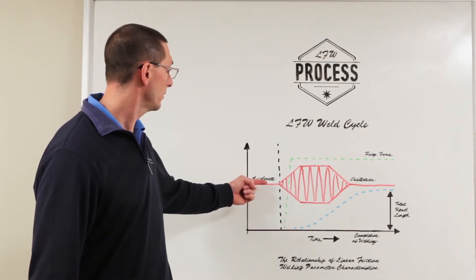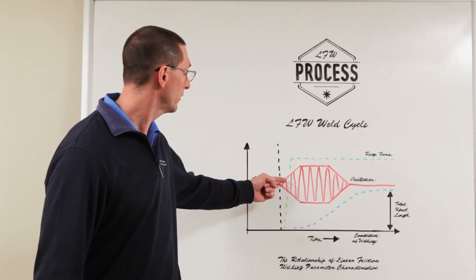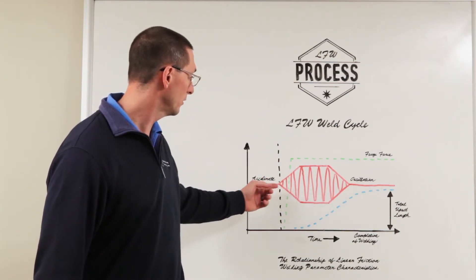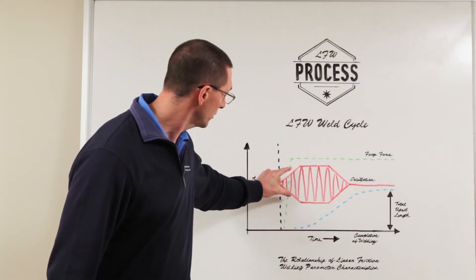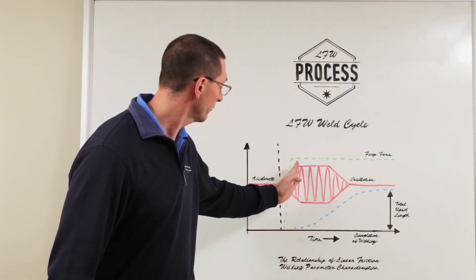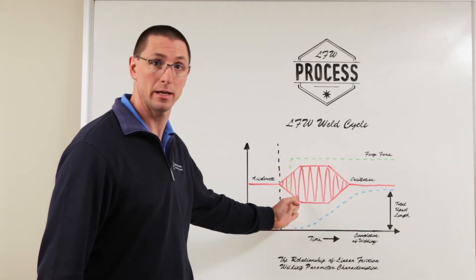So as we accelerate one part we're going to start to ramp up this frequency and the amplitude represented by the red line. So as our amplitude starts to increase we are holding our frequency and we want to get to a steady state point.